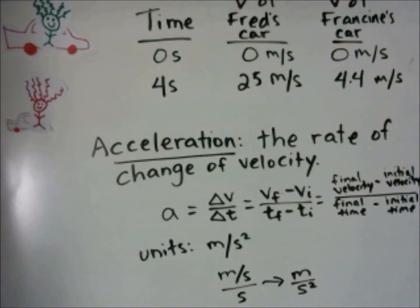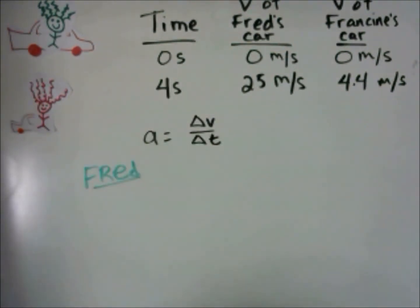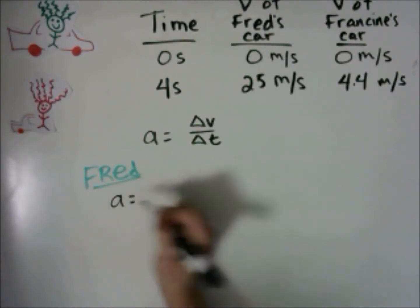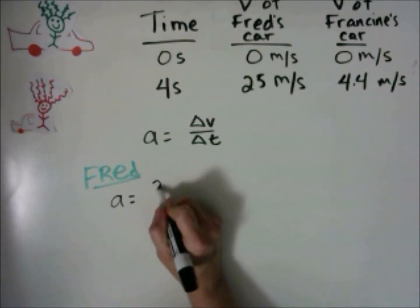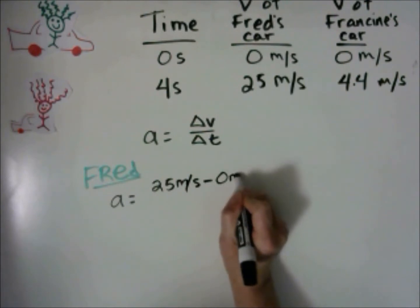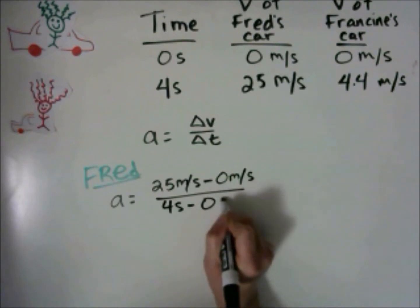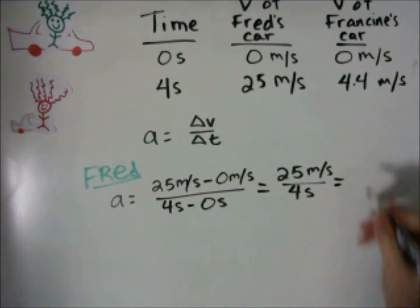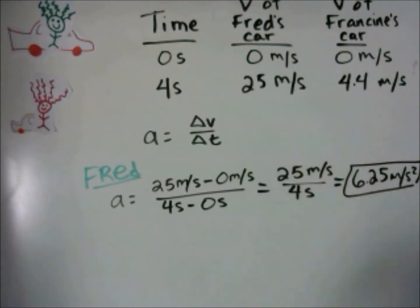Now let's use this equation to find the acceleration of Fred's car and Francine's car. For Fred, the final velocity was 25 meters per second, the initial velocity was 0 meters per second, the final time was 4 seconds, and the initial time was 0 seconds. This gives us 6.25 meters per second squared as his acceleration.